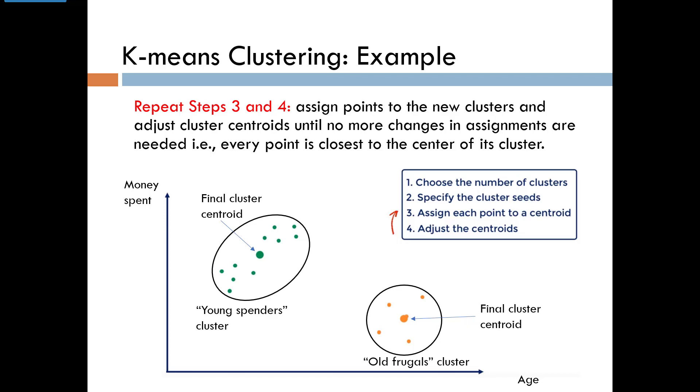That is, every point is closest to the center of its cluster. In this example, we have all the green points on the left in one cluster. This group spends more money and is of lower age, so we might call them the young spenders cluster. All the yellow points on the right are in the other cluster. This group is older and spends less money, so we can call them the old frugals cluster.